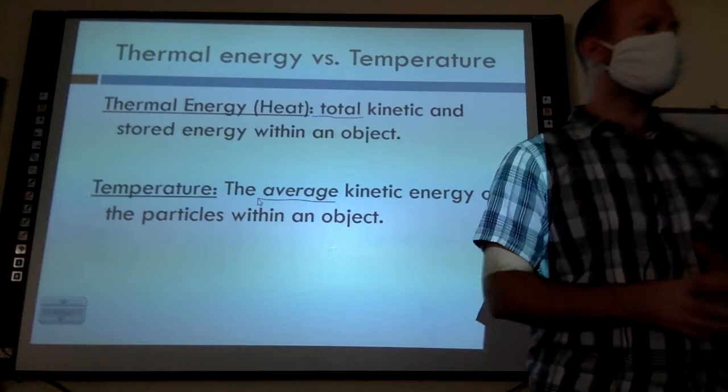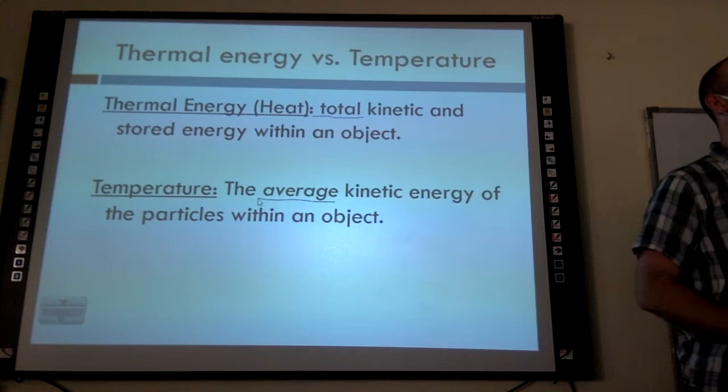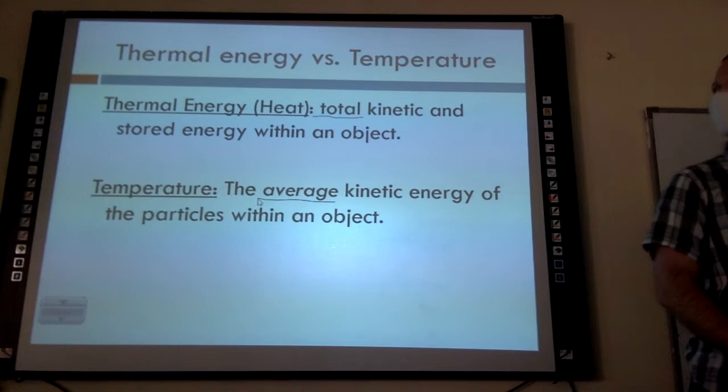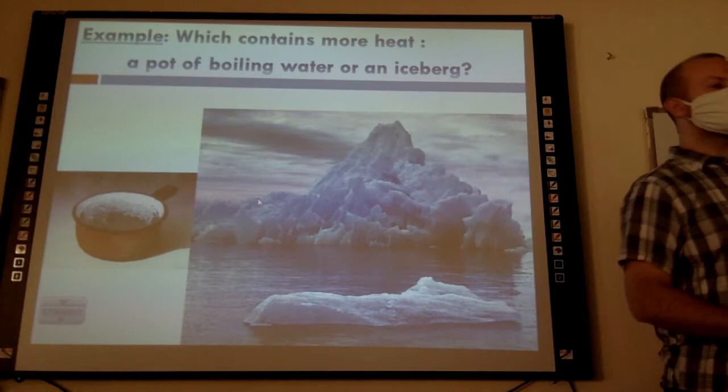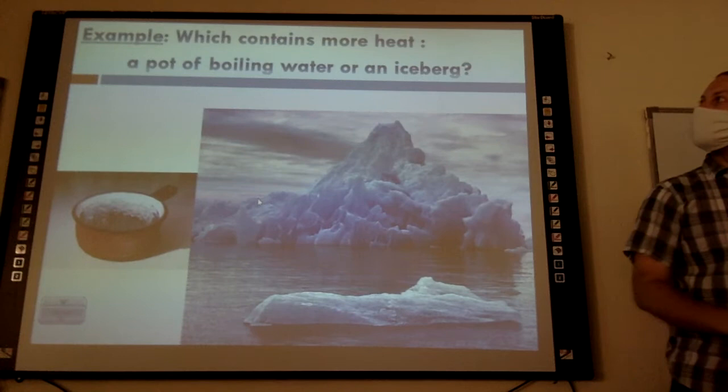Alright, is anyone still writing this out? So here's the question: I've got two objects — a pot of boiling water and an iceberg. Which of these contains more heat?